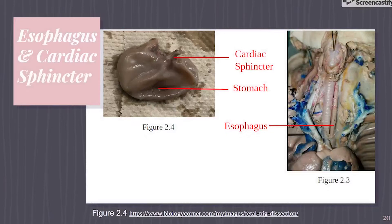Once it reaches the stomach, the cardiac sphincter, pictured in Figure 2.4, expands to let the bolus enter into the stomach. Once it has entered the stomach, pictured in Figure 2.5, chemical and mechanical digestion begins. The stomach secretes gastric juices, which are made mostly of hydrochloric acid and pepsin. These enzymes break up the food into smaller particles, and pepsin specifically starts the digestion of protein. The mechanical digestion happens when the muscles of the stomach contract and release, breaking the food down into smaller pieces.